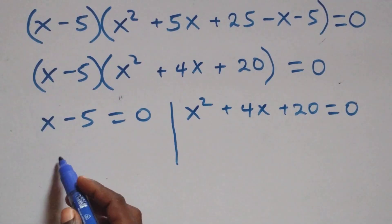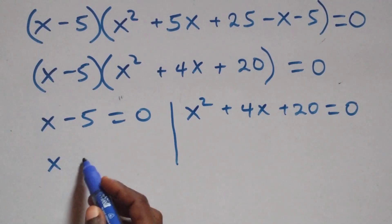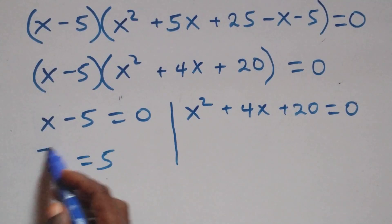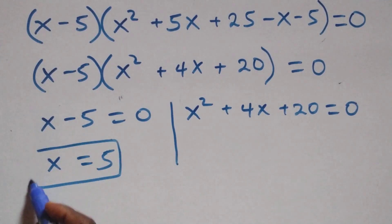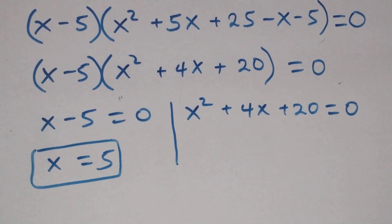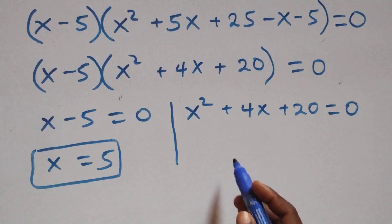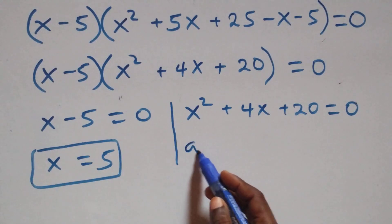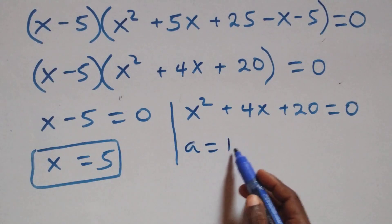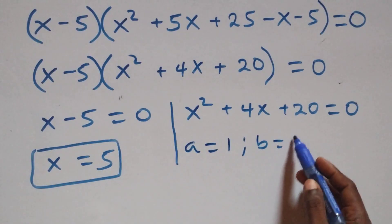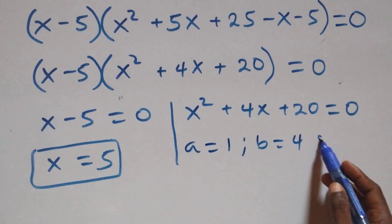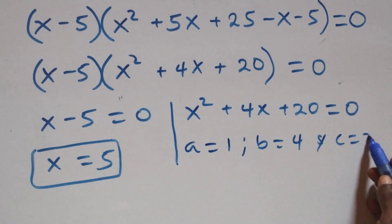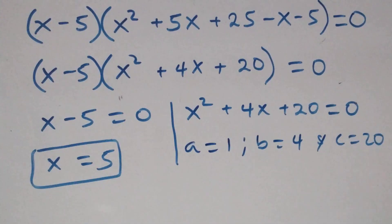Solving the first case gives x equals to 5, which is a real solution. For the second case, we have a quadratic equation with a equals to 1, b equals to 4, and c equals to 20.